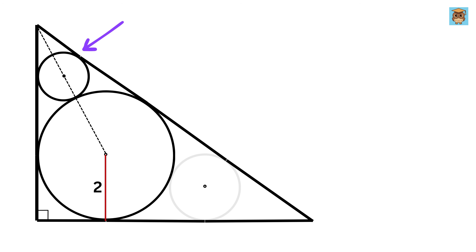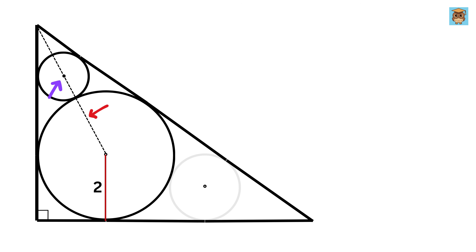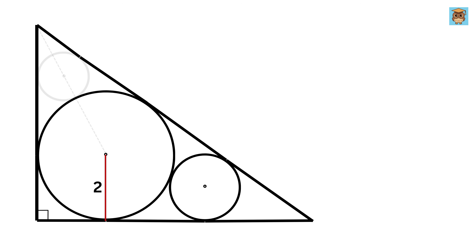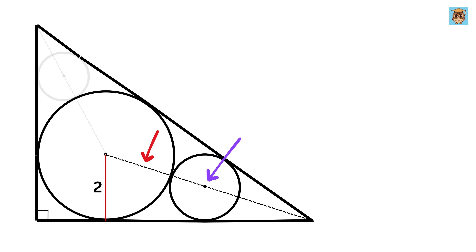In addition to this big circle, there are two smaller circles drawn inside the triangle. This smaller circle touches the vertical side of the triangle, the hypotenuse, and also touches the big circle externally. Also, the center of this smaller circle lies along this line. Draw a line connecting the center of the big circle with this vertex. Similarly, the other smaller circle touches the horizontal side of the triangle, the hypotenuse, and also touches the big circle externally. Its center also lies along this line.